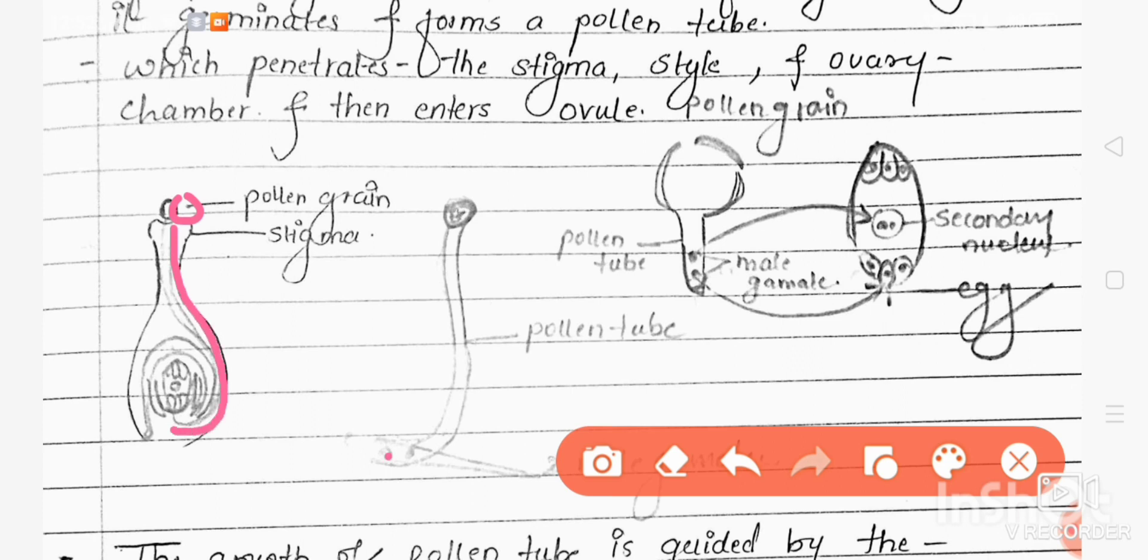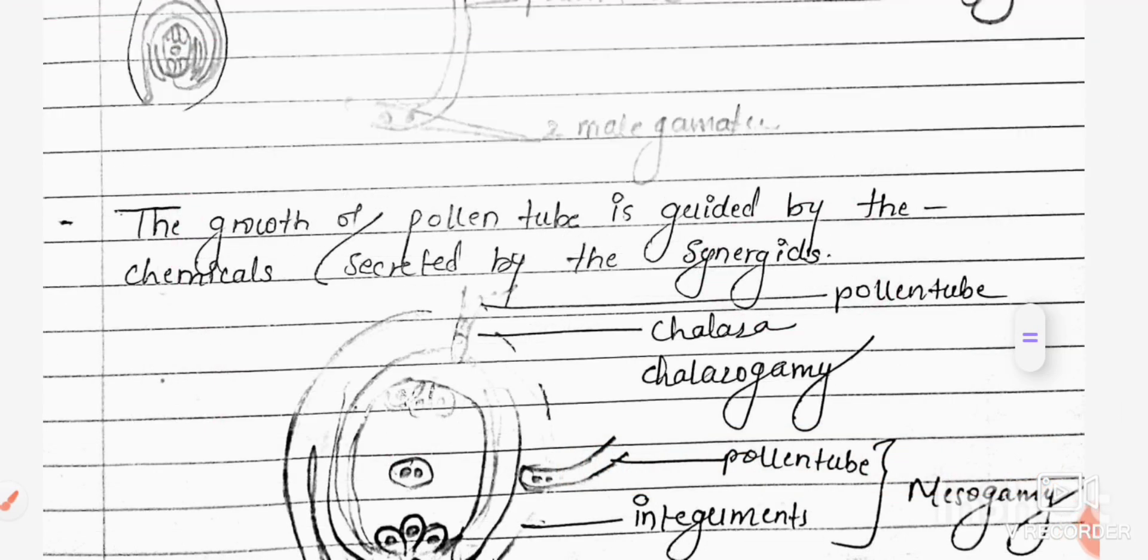Why is it termed as double fertilization? Because the first male gamete fuses with the egg, and the second male gamete fuses with the secondary nucleus. That's the reason why it is termed as double fertilization. So we will be understanding how this is taking place.